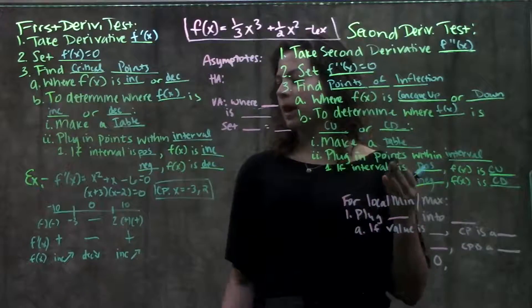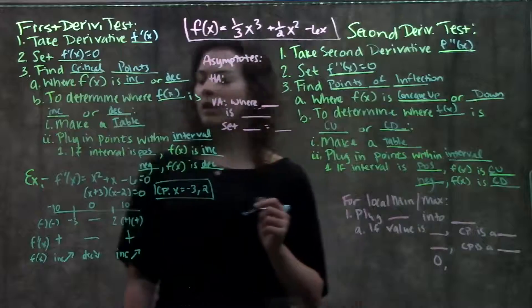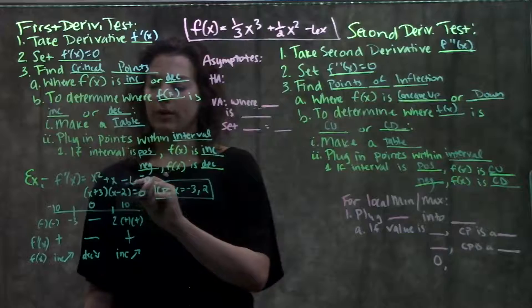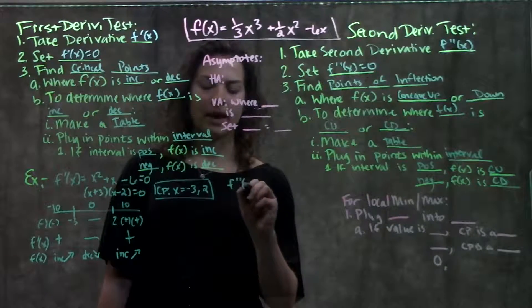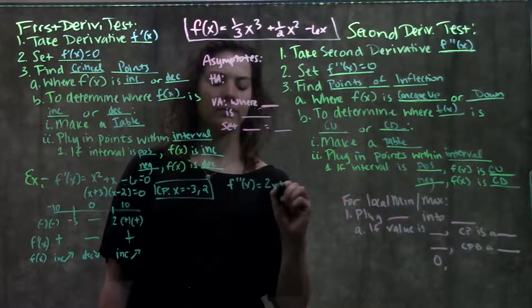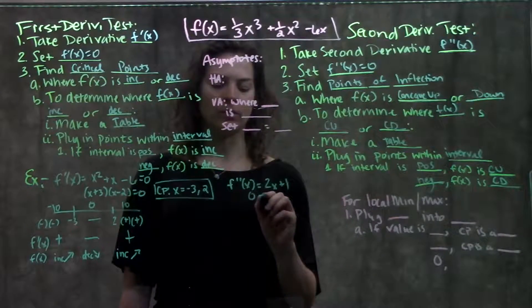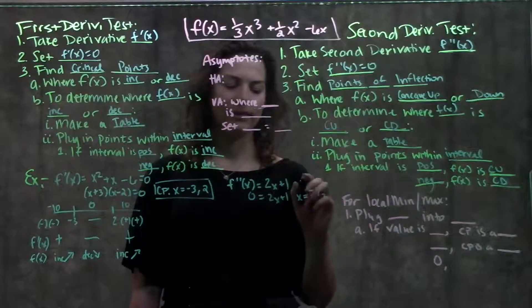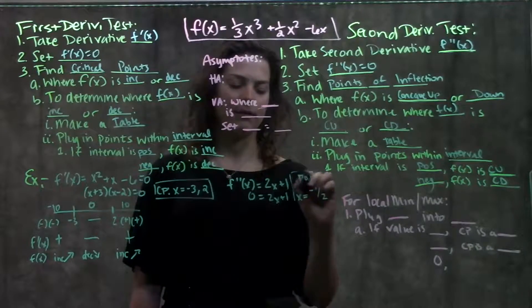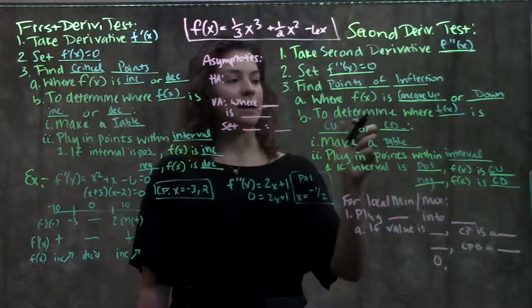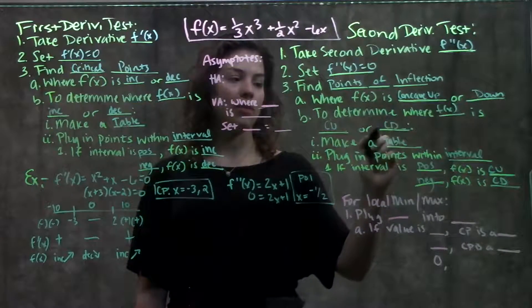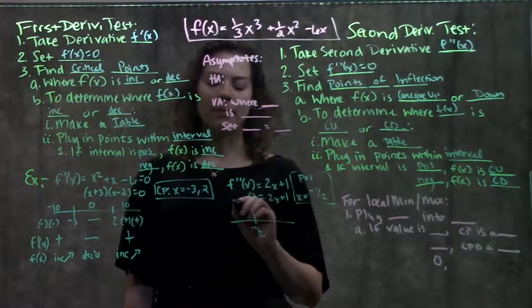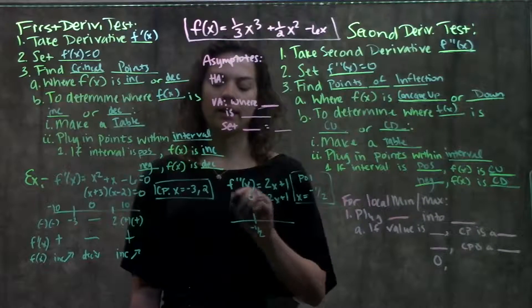Let's apply this to our example. Here's our derivative. To take the second derivative, I take the derivative of this derivative, and I get that f double prime of x equals 2x plus 1. Next step, I set this equal to zero and solve for x, and I get that x equals negative one half. This is my point of inflection.